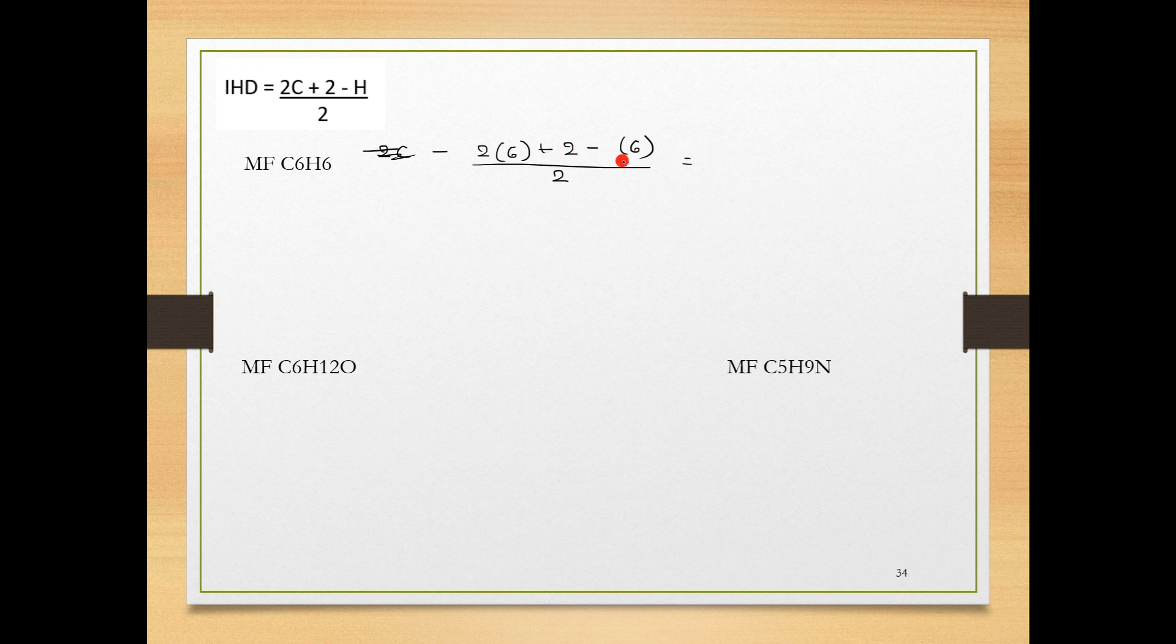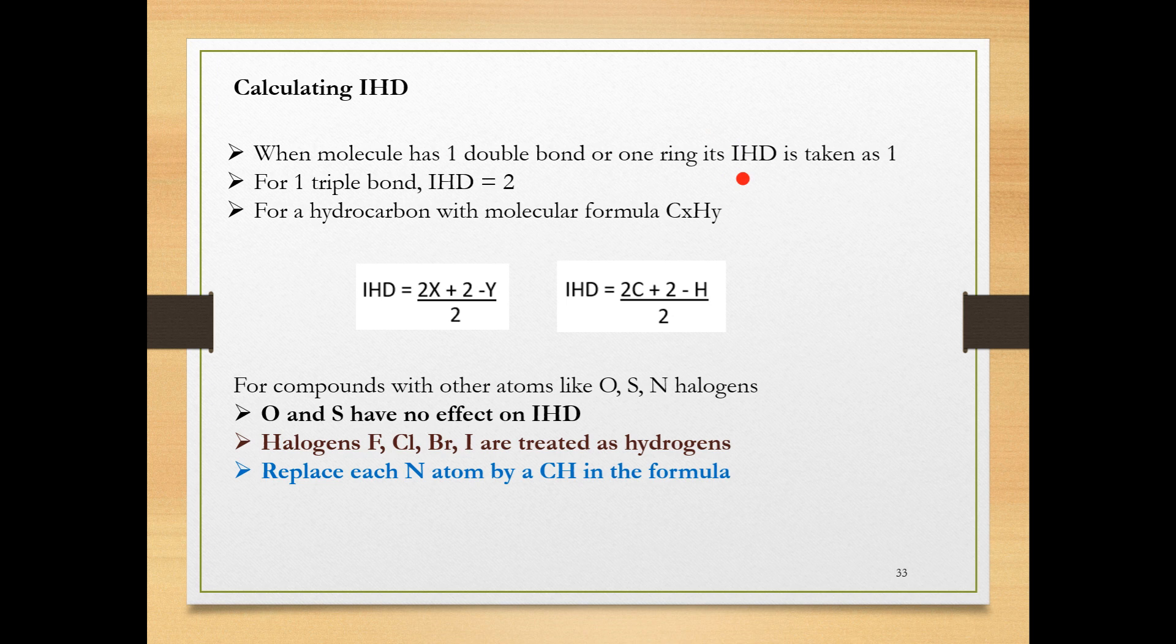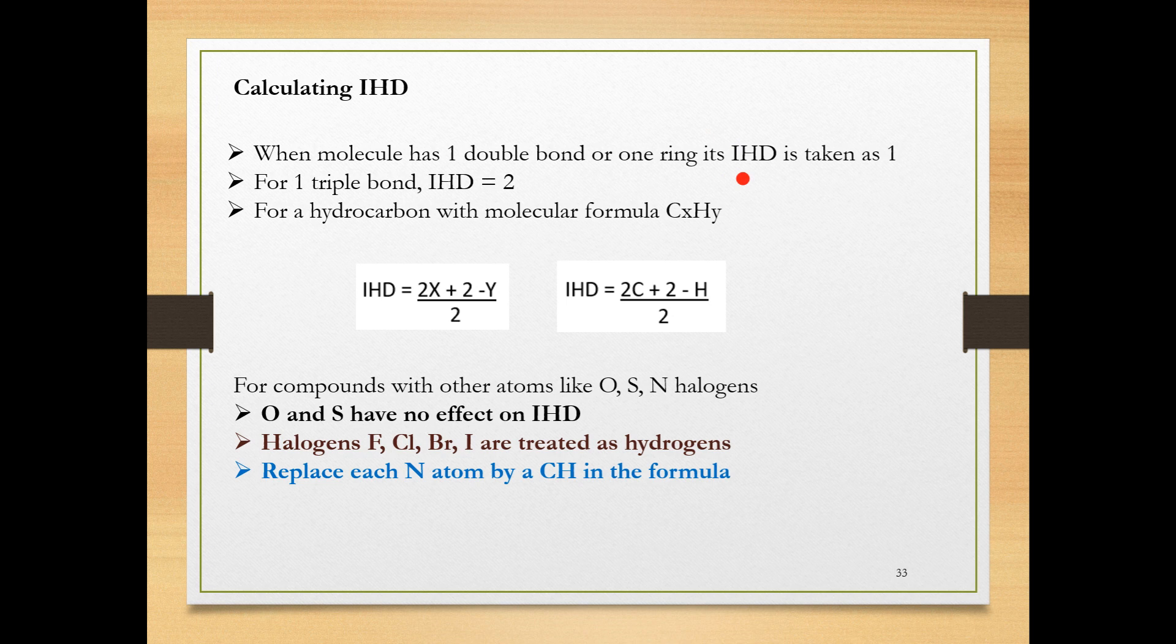This is 12 plus 2, 14 minus 6 is 8 divided by 2 is 4. IHD is coming out to be 4. Now, there are different possibilities. If the answer is 4, what could be the possibilities? IHD value 1 means 1 double bond, but the IHD value is 4, so there could be possibility of 4 double bonds.